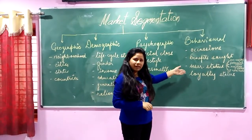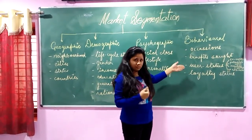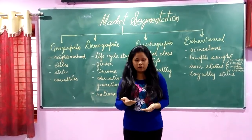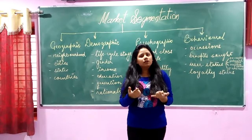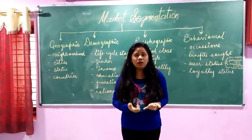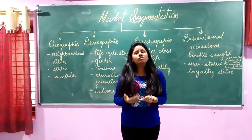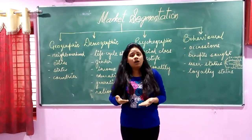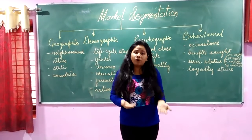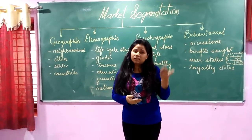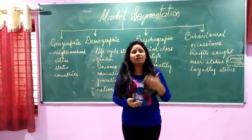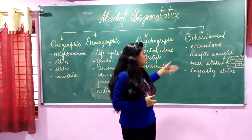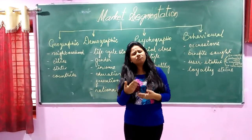A company can also divide its market according to the loyalty status of their buyers. For example, Colgate is a hardcore brand-loyal product. Some consumers may also be loyal to stores, such as Big Bazaar — some people prefer only buying from Shop-A-Stop or Walmart because they find it compatible to their needs. So the market can also be divided according to loyalty status.